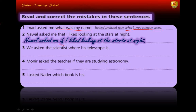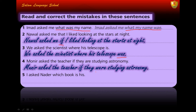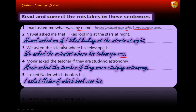Number three: 'We asked the scientist where his telescope is' — the correct answer is 'We asked the scientist where his telescope was.' Number four: 'Munir asked the teacher if they are studying astronomy' — the correct answer is 'Munir asked the teacher if they were studying astronomy.' Number five: 'I asked Nether which book is his' — the correct answer is 'I asked Nether which book was his.'